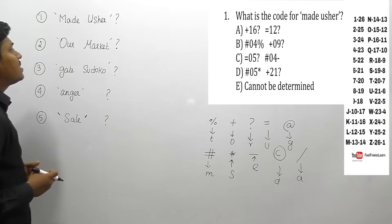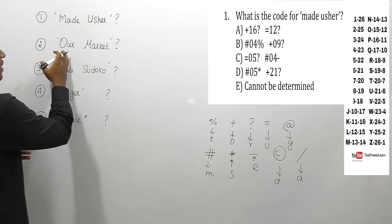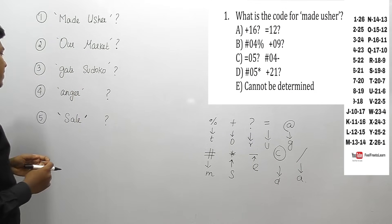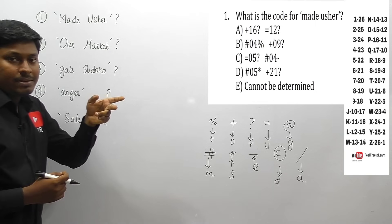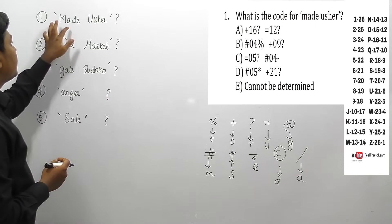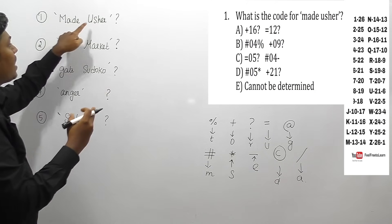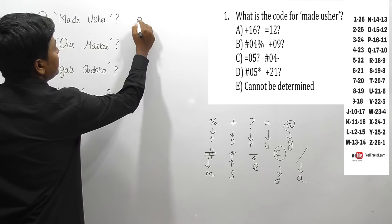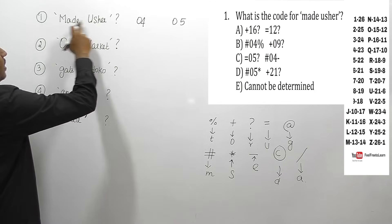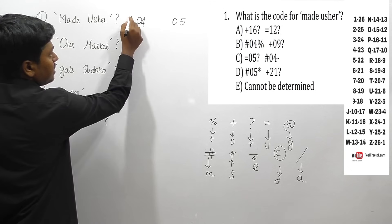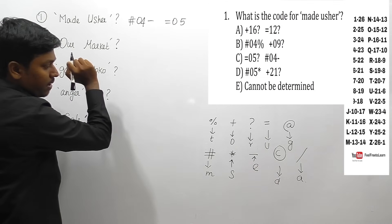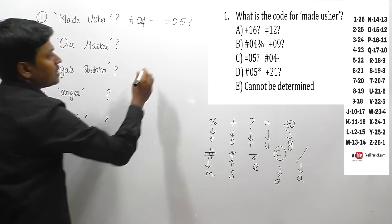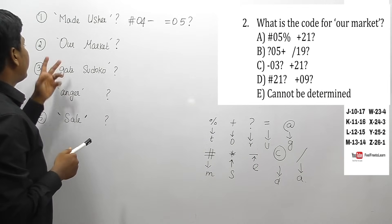Question 1: find the code for 'made'. Each word is coded with a symbol at start, number in center, symbol at end. D = 4 and E = 5, so the center is not 4 and not 5 here. M is coded as the copyright symbol, E is coded as minus, U as equal to, R as question mark. So option C is the answer for question 1.